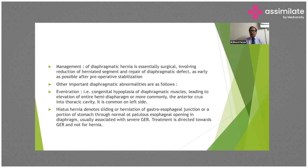Other diaphragmatic abnormalities include eventration of the diaphragm — congenital hypoplasia of diaphragmatic muscle leading to elevation of the entire hemidiaphragm, more commonly the anterior crus, into the thoracic cavity, and more common on the left side. Hiatus hernia denotes sliding or herniation of the gastroesophageal junction through the esophageal opening in the diaphragm and is usually associated with severe gastroesophageal reflux; treatment is directed towards GER, not the hernia.